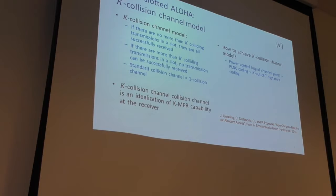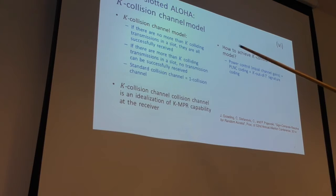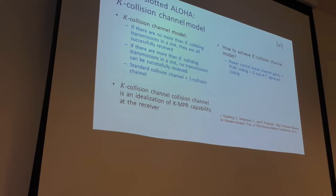We also consider a generalization called the K-collision channel model. The standard collision channel can be called the 1-collision channel: if there is at most one user in a slot, we can decode it. The K-collision channel model generalizes this: if there are not more than K users in a slot, we can decode all of them. One way to realize this is through power control, physical network coding (PLNC) to remove noise, and K-out-of-N signature coding.